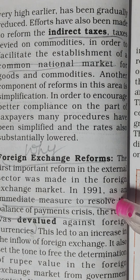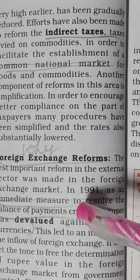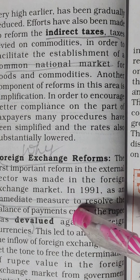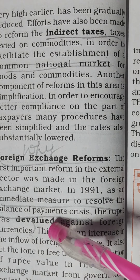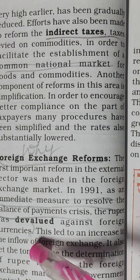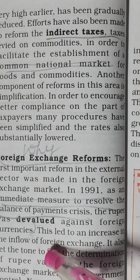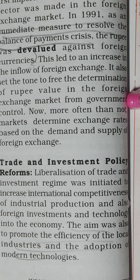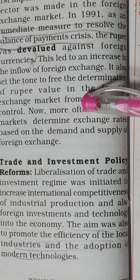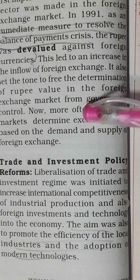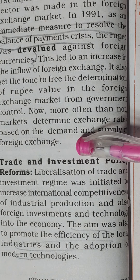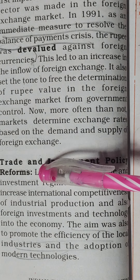Foreign exchange reforms. The first important reform in the external sector was made in the foreign exchange market. In 1991, as an immediate measure to resolve the balance of payment crisis, the rupee was devalued against foreign currencies. This led to an increase in the inflow of foreign exchange and set the tone to free the determination of the rupee's value in the foreign exchange market from government control. Now, more often than not, markets determine exchange rates based on the demand and supply of foreign exchange.